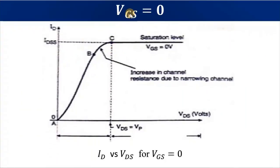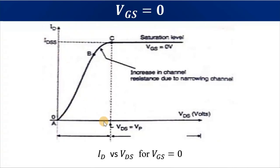A drain curve for VGS = 0: this is a graph of drain-to-source voltage against drain current. The maximum drain current when VDS equals pinch-off voltage is called IDSS — the saturation value. In the ohmic region, drain current increases with VDS. At pinch-off voltage, drain current levels off into saturation. When breakdown voltage is reached, there is a rapid increase in drain current.